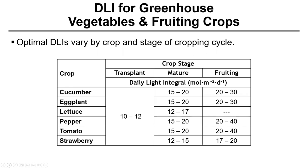What are the optimal DLI setpoints for hydroponic crops? They vary by crop and stage of the cropping cycle. For lettuce, 10 to 12 moles per meter squared per day during transplant production, increasing to 12 to 17 moles per meter squared per day during the mature stage. However, for greenhouse cucumbers, this needs to go all the way up to 20 to 30 moles per meter squared per day to optimize flowering and fruit set, thereby producing higher yields. When one selects the type of crop, they need to determine the level of technology required — one of those technologies may be the utilization of horticultural lighting units.